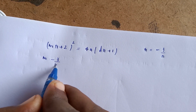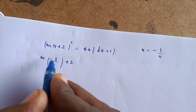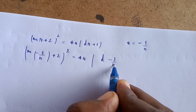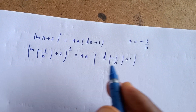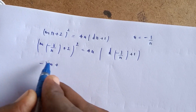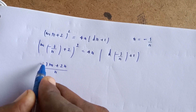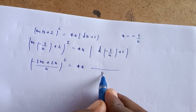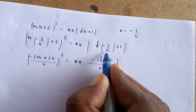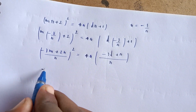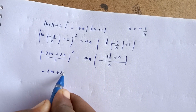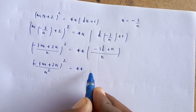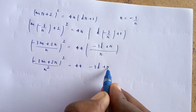Substituting R = -3/N into y = MR + 2: we get (M·(-3/N) + 2)² = 4a·(L·(-3/N) + 1). Simplifying: ((-3M + 2N)/N)² = 4a·((-3L + N)/N).